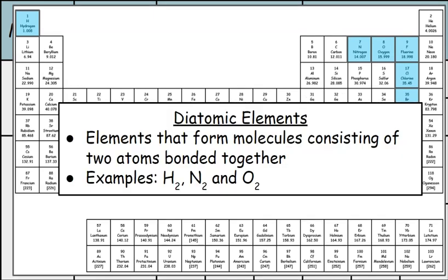Due to this, we have diatomic elements. Diatomic elements are elements that form molecules consisting of two atoms bonded together. So, for example, H2, N2, O2. You wouldn't see one hydrogen by itself. It would have to bond with another hydrogen to form H2.